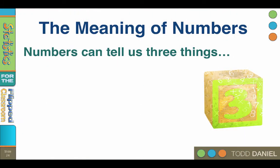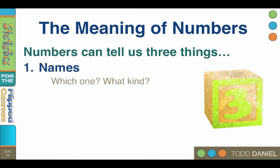Numbers can tell us three things. Names — numbers can tell us which one. Which player was down field on the pass? Number 78. Numbers can also tell us what kind.